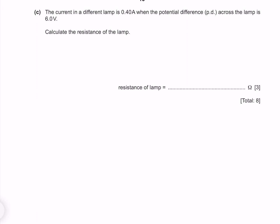The current in a different lamp is 0.4 amps when the potential difference across the lamp is 6 volts. Calculate the resistance of the lamp. Ohm's law states that V equals IR. To solve for resistance, we divide both sides by our current. Our voltage is 6 and our current is 0.4, which gives me 15 ohms.